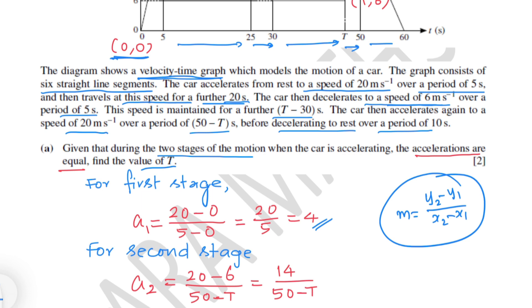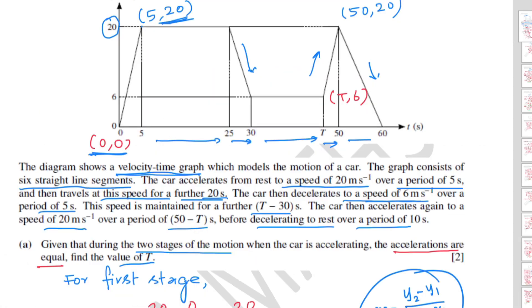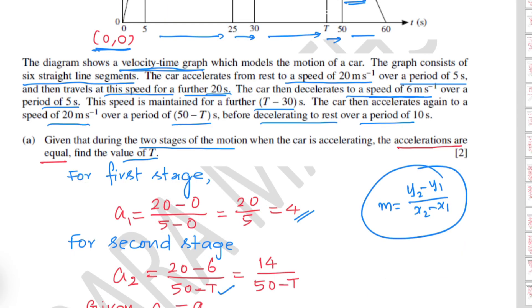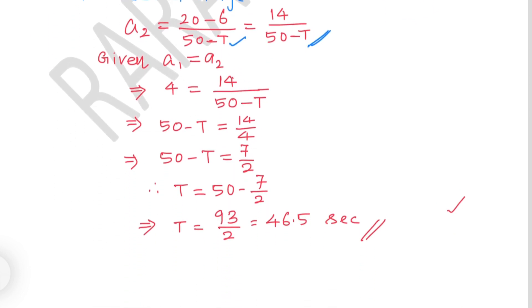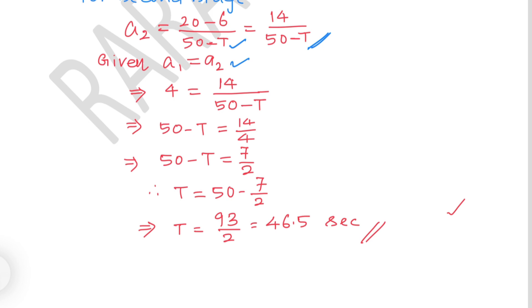For the second stage, the acceleration starts at the point (t, 6) and reaches (50, 20). Using the gradient formula gives 20 minus 6 over 50 minus t, equal to 14 over 50 minus t. Since the accelerations are equal, 4 equals 14 over 50 minus t. Cross-multiplying gives 50 minus t equals 14 over 4, that is 7 over 2, therefore t equals 50 minus 3.5, which is 46.5 seconds.